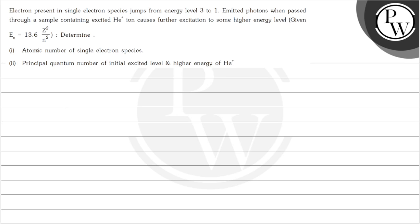It is given that En equals 13.6 times z squared by n squared. We have to determine the atomic number of the single electron species and the principal quantum number of the initial excited level and higher energy level of He+.